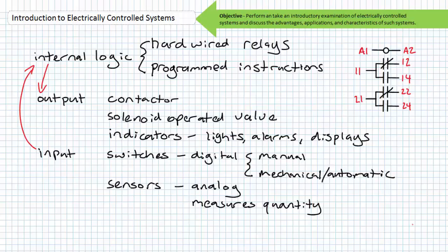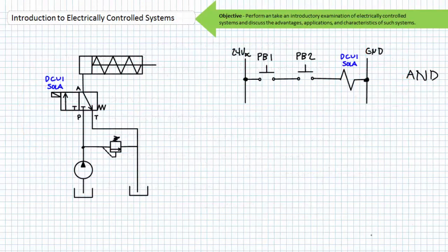It is the arrangement of input devices, output devices, and internal control relays that dictate the function of an electrically controlled system. Consider two switches — pushbutton 1 and pushbutton 2 — wired in series. This is the logical AND operator. The only way an operator can energize the solenoid of DCV1 Sol-A is if both pushbuttons are simultaneously closed. This is a common safety feature requiring an operator to have both hands cleared from the workspace prior to extending a hydraulic cylinder, such as in a hydraulically driven press or shear.